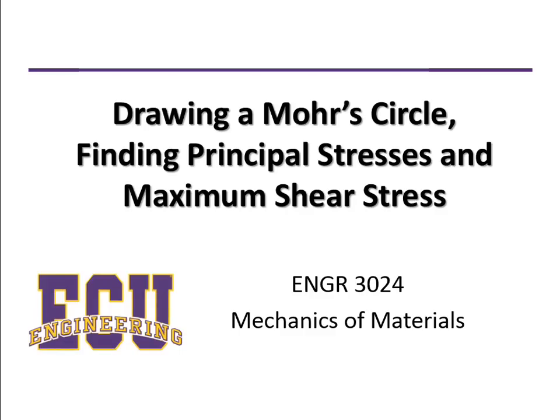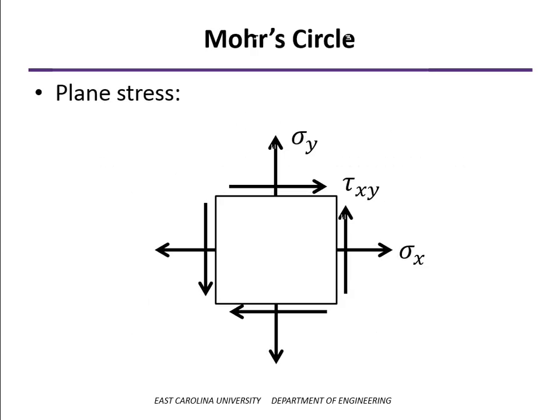In this video we're going to go over the steps of drawing a Mohr circle and then use the information on the Mohr circle to find our principal stresses and the maximum shear stress for a state of plane stress. By definition, a plane stress state can have up to three independent stresses: two normal stresses, sigma x and sigma y, and one component of shear stress, tau xy.